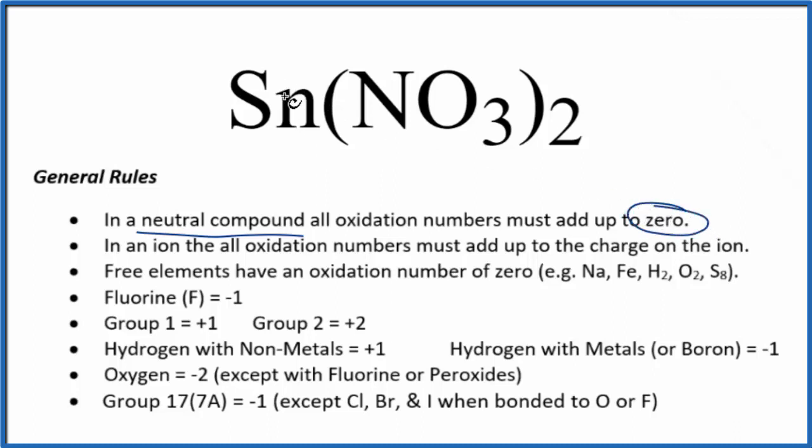Tin, that's a transition metal, so we don't know its oxidation state. We have to look at what it's bonded to here to figure that out. In this case, the tin is bonded to the nitrate ion, NO3 here. So this nitrate ion always has a one minus ionic charge.